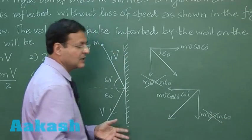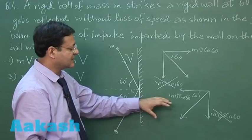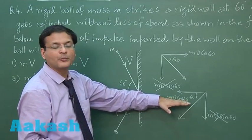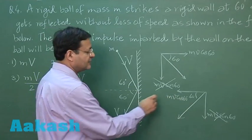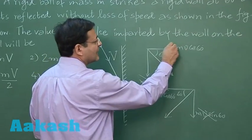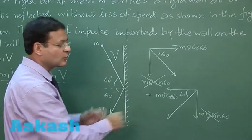So I am not considering them. I am just saying that the change is only in this horizontal component, that is M v cos 60. If I take this value as plus, then this value will have to be taken as minus, because they are in opposite directions.